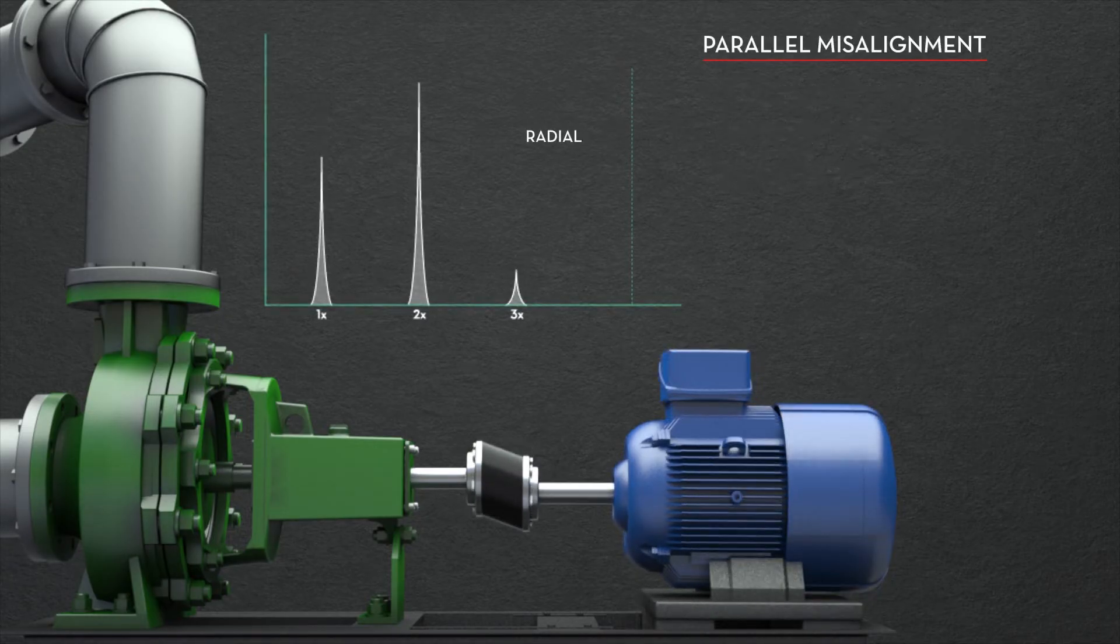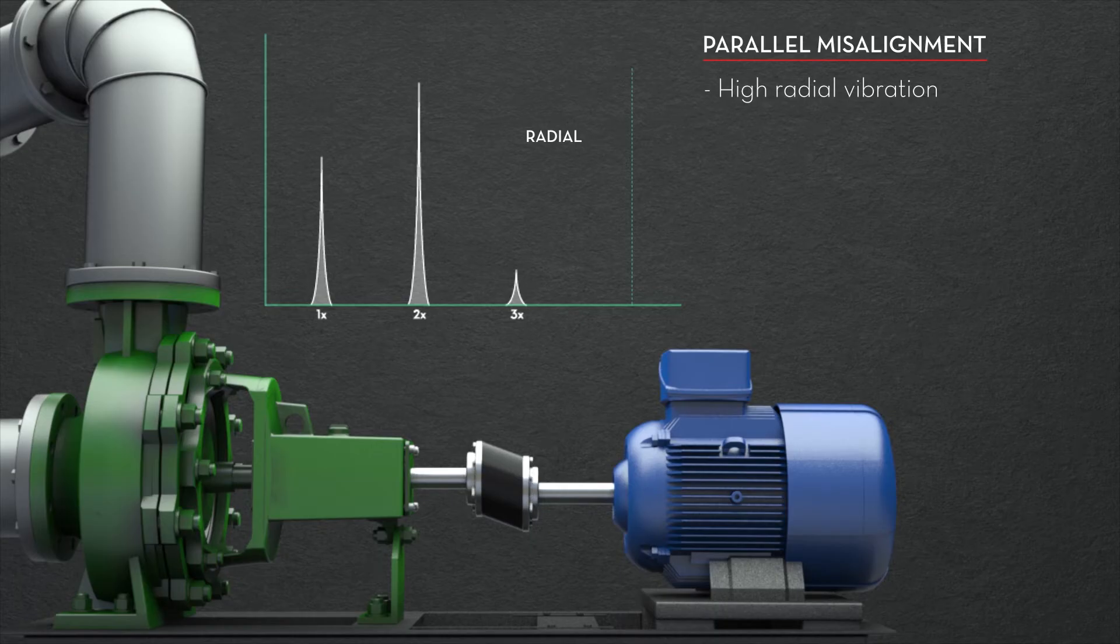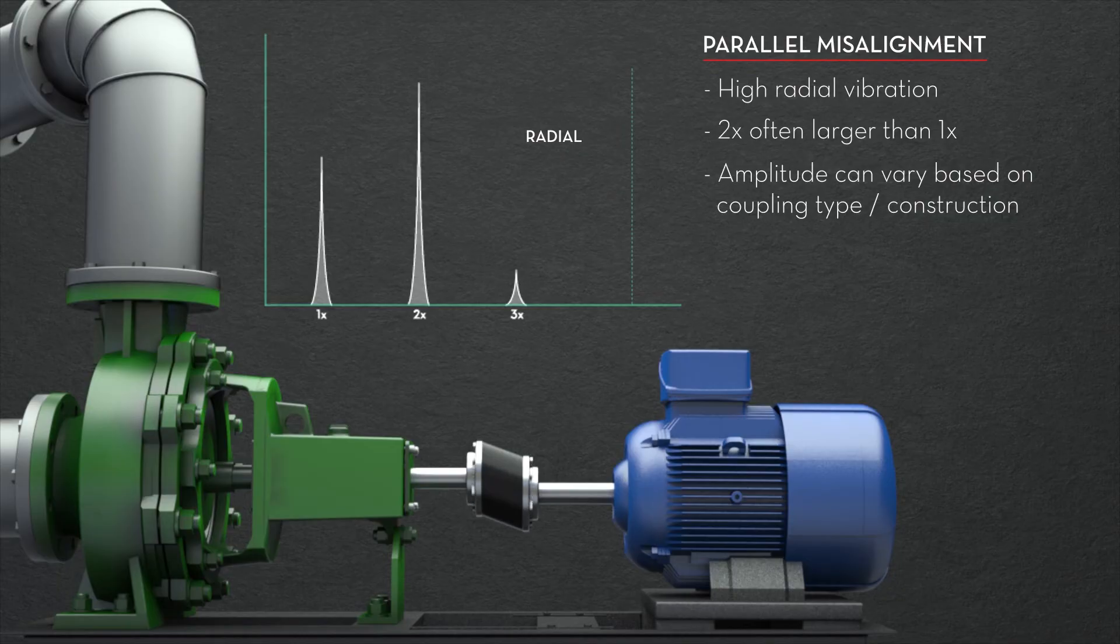With parallel misalignment, there is high radial vibration and 2x is often larger than 1x. Amplitude can vary based on coupling type and construction.